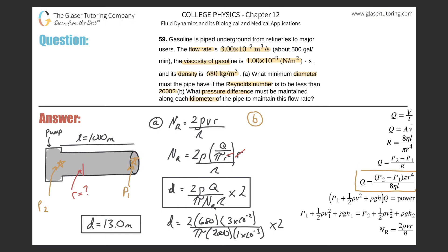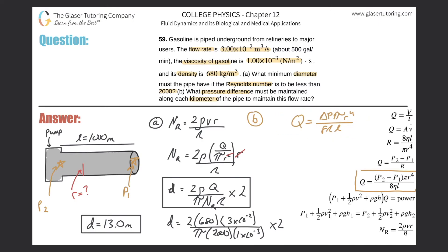We're asked to find ΔP = p₂ − p₁. Using the Poiseuille equation: Q = ΔP·π·r⁴ / (8·η·L). Rearranging algebraically to solve for ΔP, we move π·r⁴ from the numerator to the denominator and move 8·η·L up: ΔP = 8·η·L·Q / (π·r⁴).